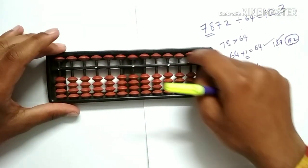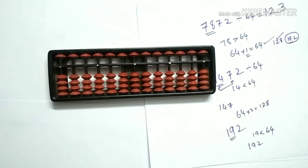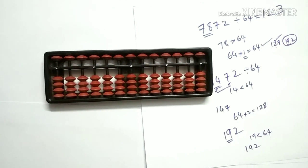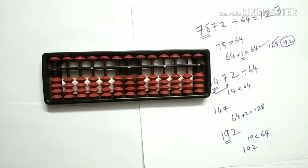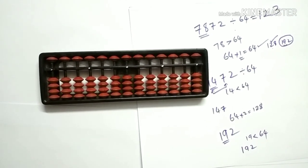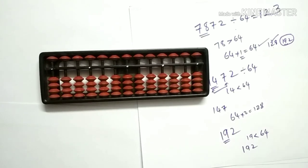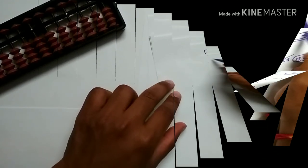We are left with 0. That means 64 is directly divisible — it's a multiple of 7872 — and our quotient is 123.